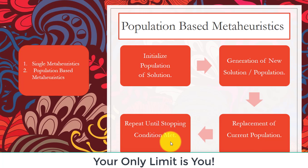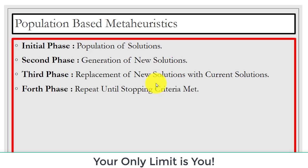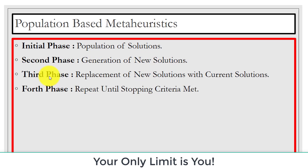Now we will discuss all phases in detail. First is the initial phase: we initialize the population of solutions using random numbers between 0 and 1. Second is the generation of a new solution for the next iteration. After that, in the third phase, we replace the new solution with the current solution.